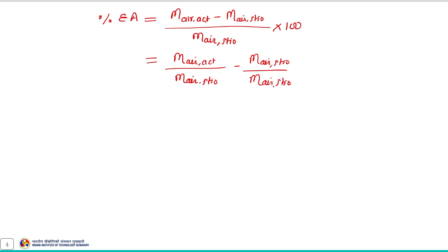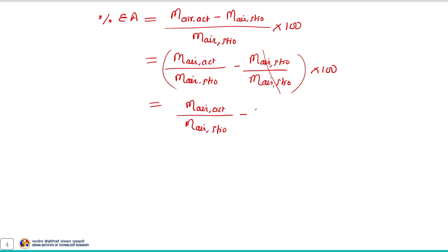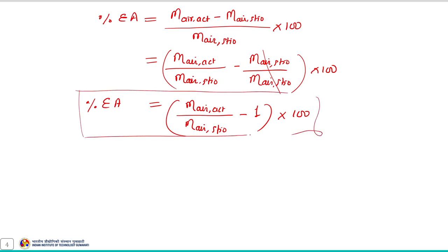Percentage excess air can be calculated using: % excess air = [(mass of air actual − mass of air stoichiometric) / mass of air stoichiometric] × 100, which simplifies to [(mass of air actual / mass of air stoichiometric) − 1] × 100, where the subscripts indicate actual and stoichiometric amounts.